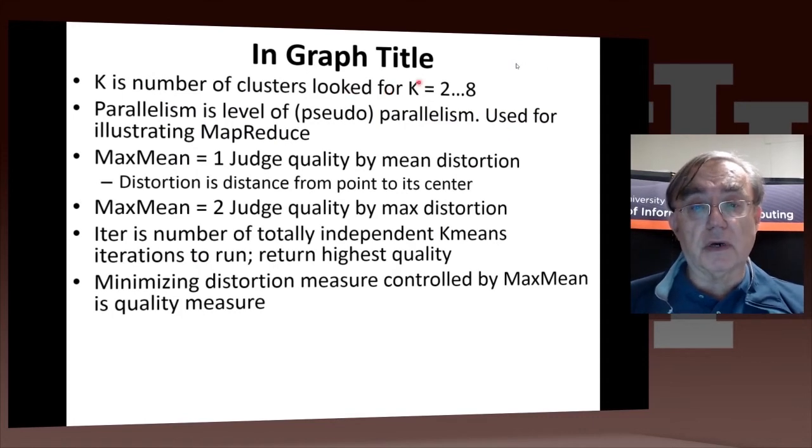If you look at this graph title, I've just gone through it in what it has. It has the number of clusters running from 2 to 8. It has the parallelism. It has this max mean value, which is in more detail judging by the mean distortion for 1 and the maximum distortion of 2. There is the number of independent iterations, number of different center starting positions used. And we minimize the distortion measure as we run over these iterations controlled by max mean.